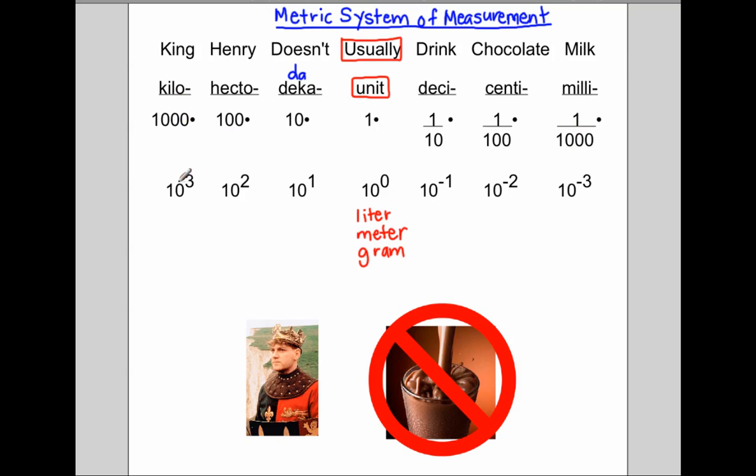And a thousand is ten to the third power. Hecto is ten to the second power. Ten is ten to the first power. One is ten to the zero power. Anything to the zero power is always one.